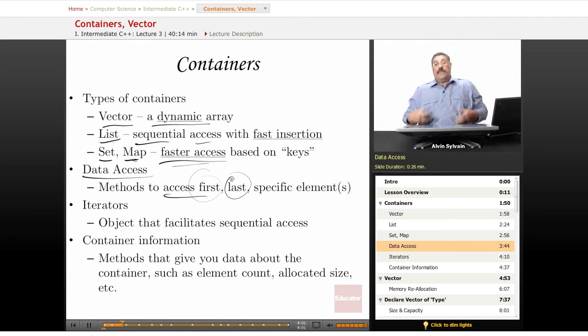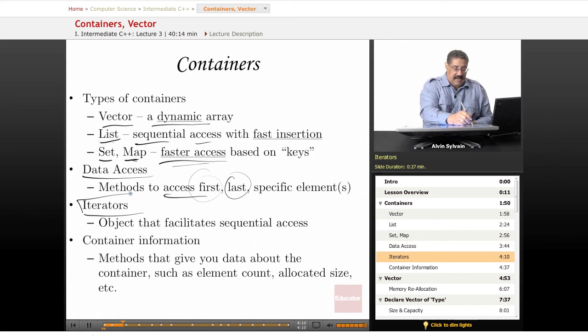You cannot easily with a list, set, or map say 'I want the twelfth element,' whereas with a vector - twelfth element, here you go, twelfth element, no problem. Now, iterators will be a new concept.